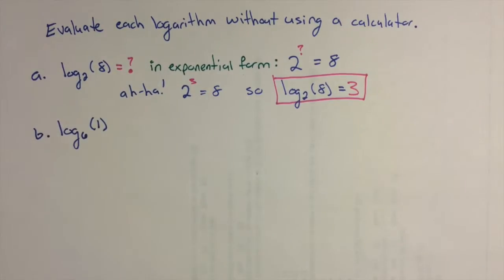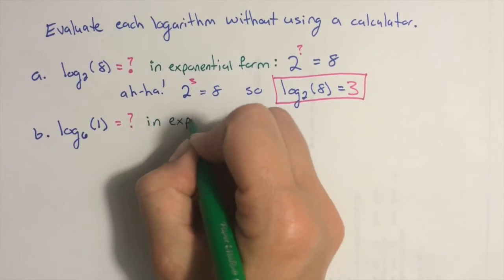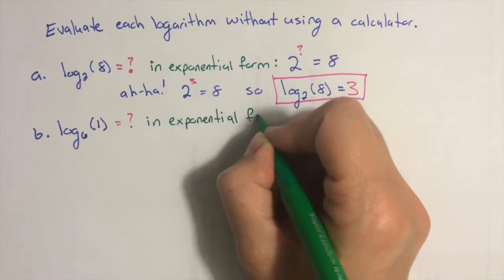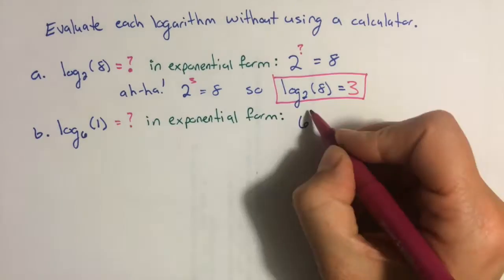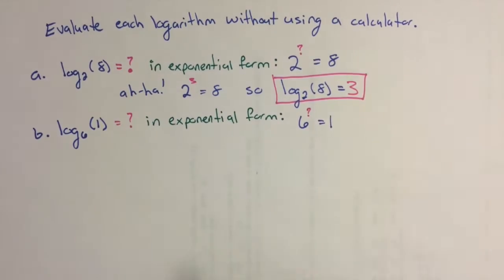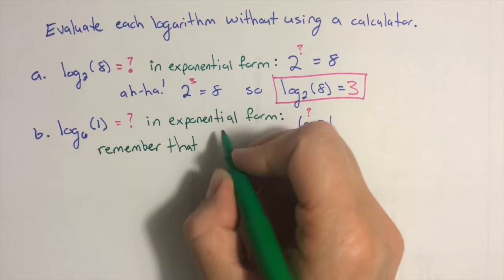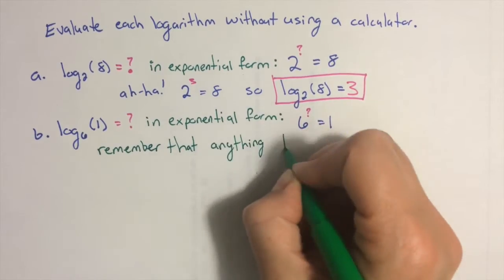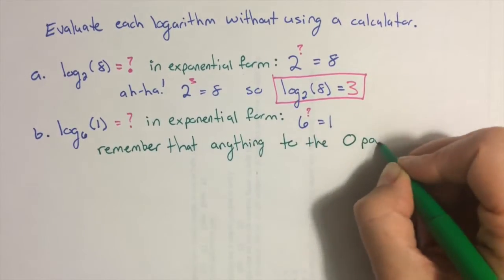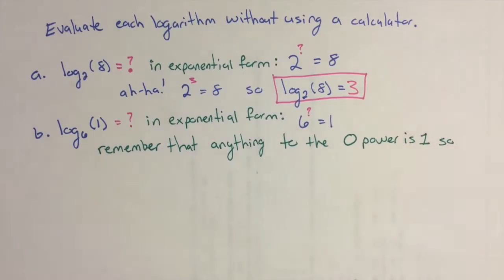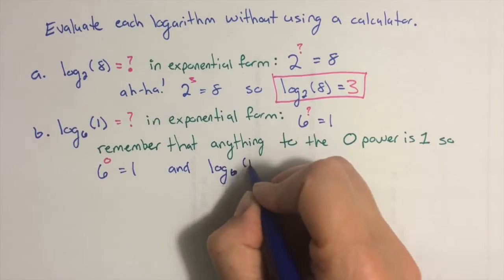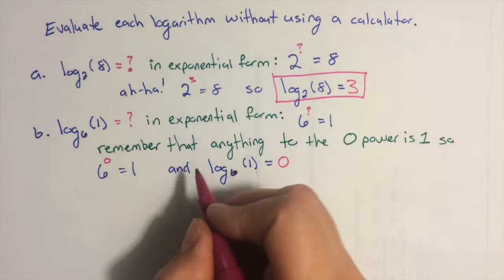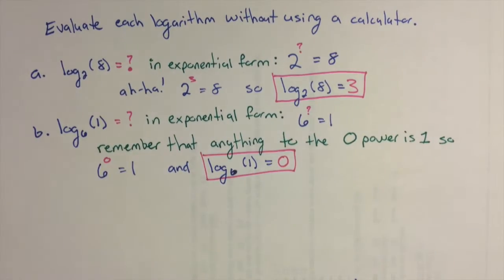For our second problem, we'll take a look at log base 6 of 1. Log base 6 of 1 equals what? In exponential form, that's 6 to the what equals 1. Remember that anything to the 0 power is 1, so 6 to the 0 power is 1, and log base 6 of 1 must be 0.